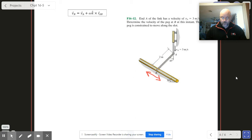So here is VA for us. VA as a vector is minus 3J, just like that.